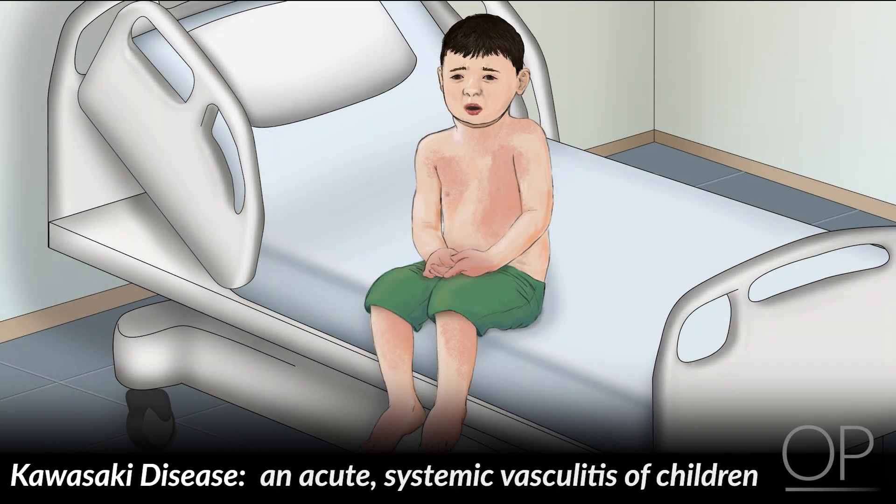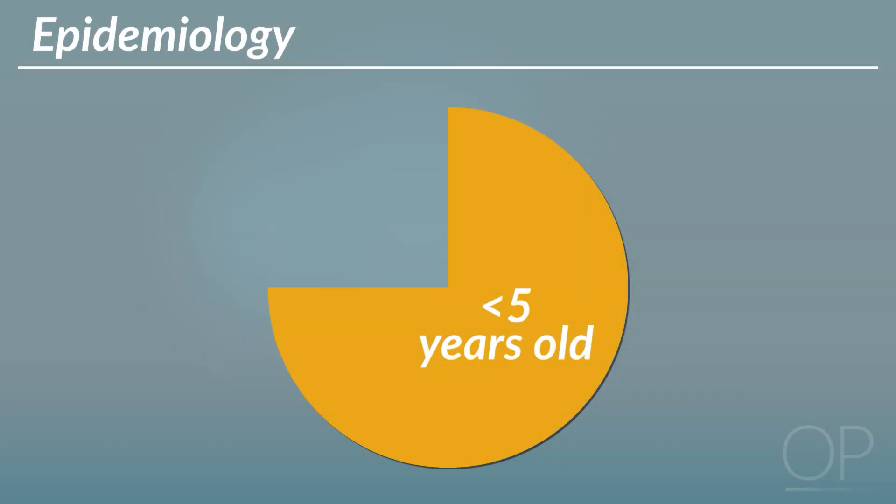Kawasaki disease is an acute systemic vasculitis of children. Approximately three-quarters of children presenting with acute disease are younger than age five, but Kawasaki disease can occur in older children as well.